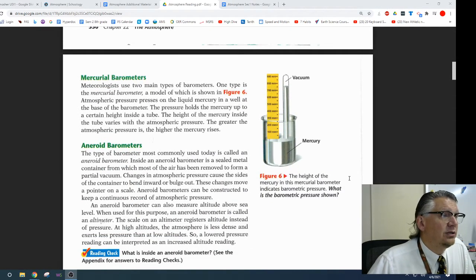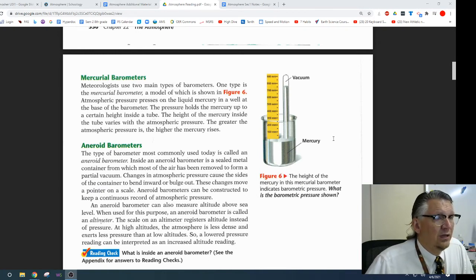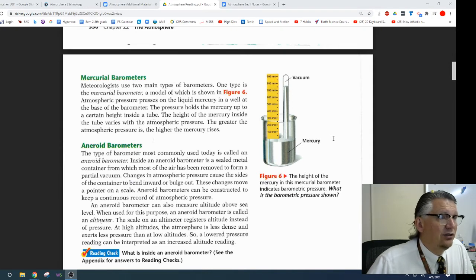Mercurial barometers. Meteorologists use two types of barometers. One is a mercurial barometer, a model which is shown in Figure 6. Atmospheric pressure on liquid mercury in a well at the base of the barometer. The pressure holds the mercury up to a certain height inside the tube. The height of the mercury inside the tube varies with atmospheric pressure. The greater the atmospheric pressure is, the higher the mercury rises.